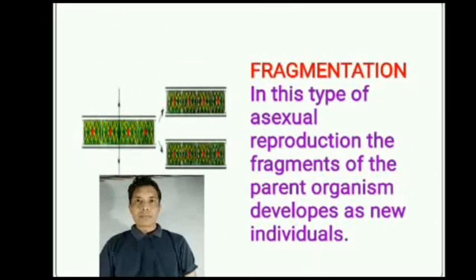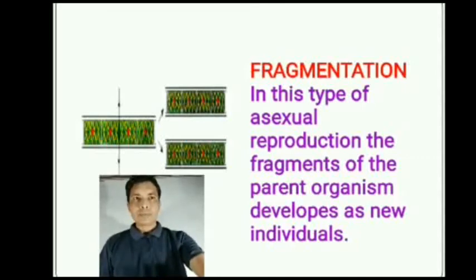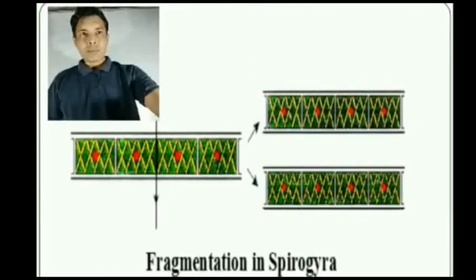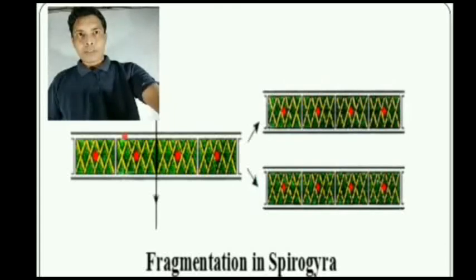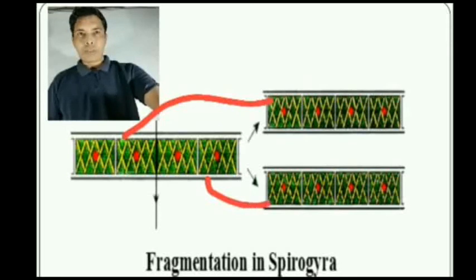Now fragmentation: it is the type of asexual reproduction in which fragments of the parent organism develop into new individuals. One example is Spirogyra. In this picture, two fragments of Spirogyra are separated and develop into new individuals.